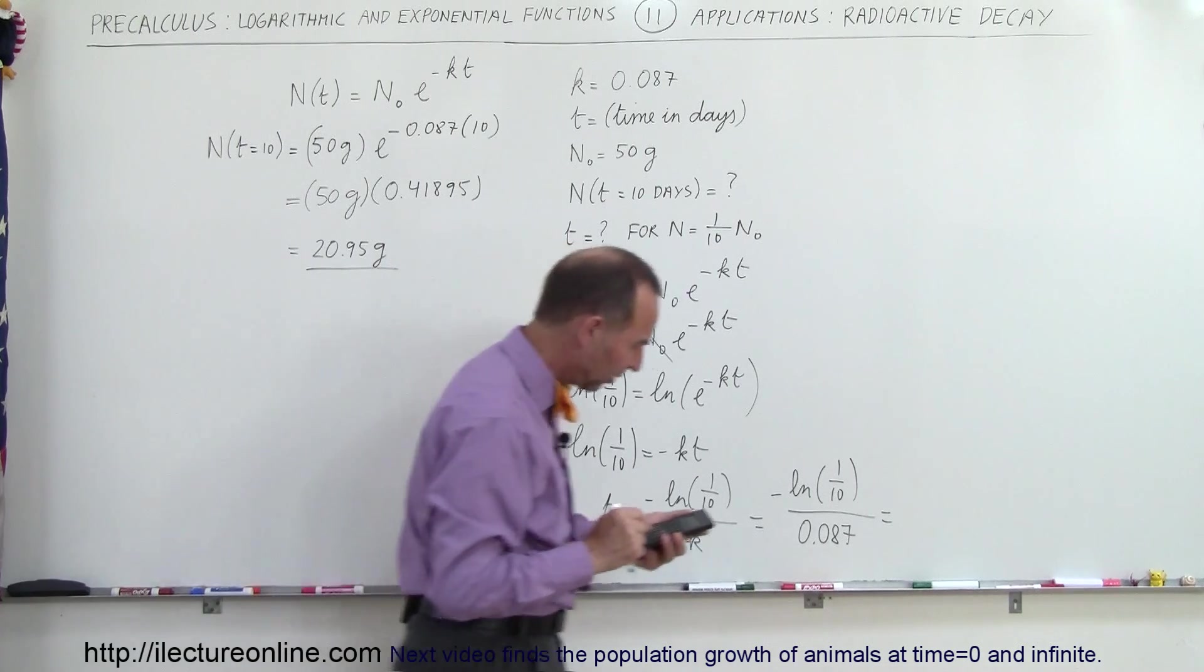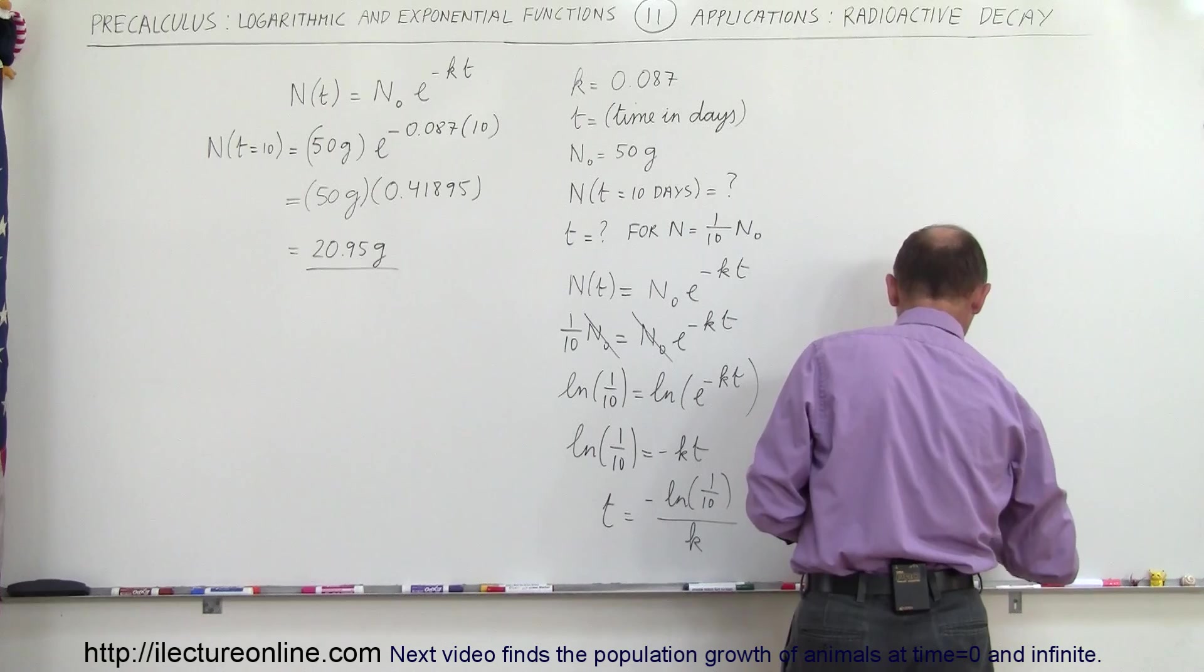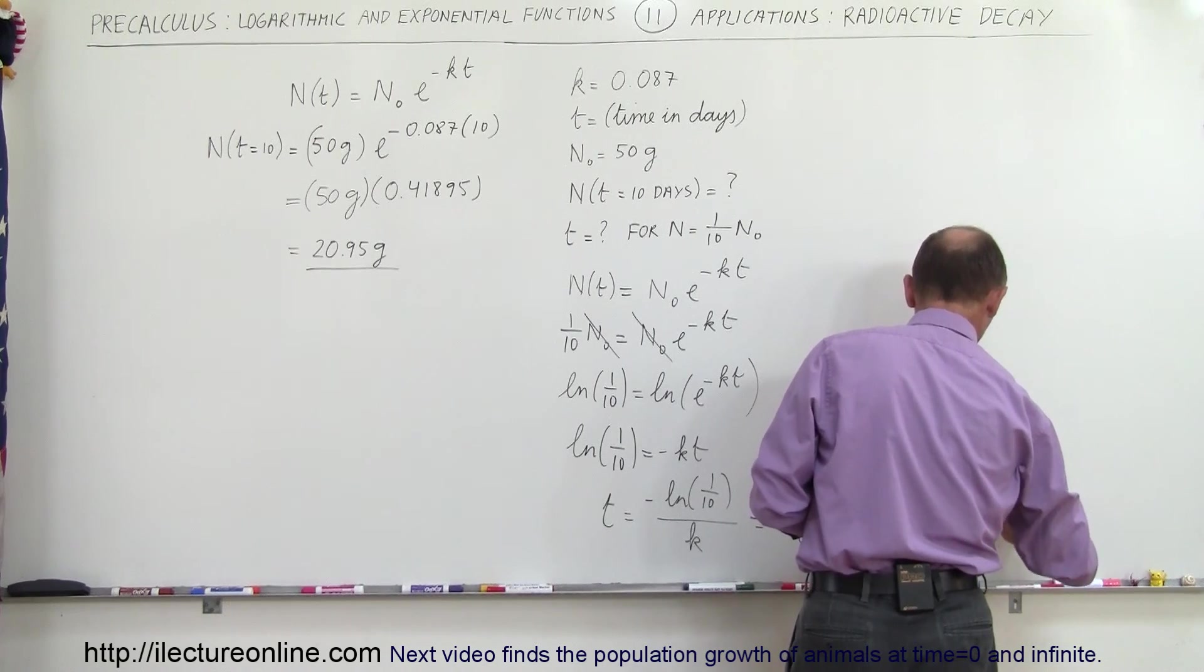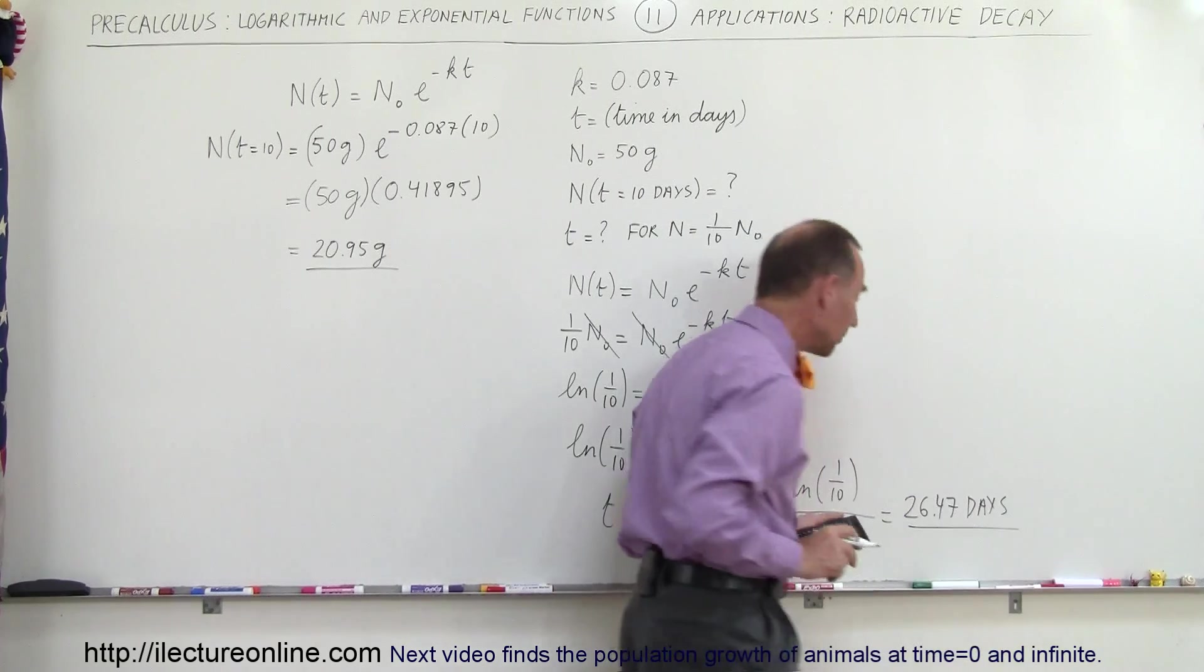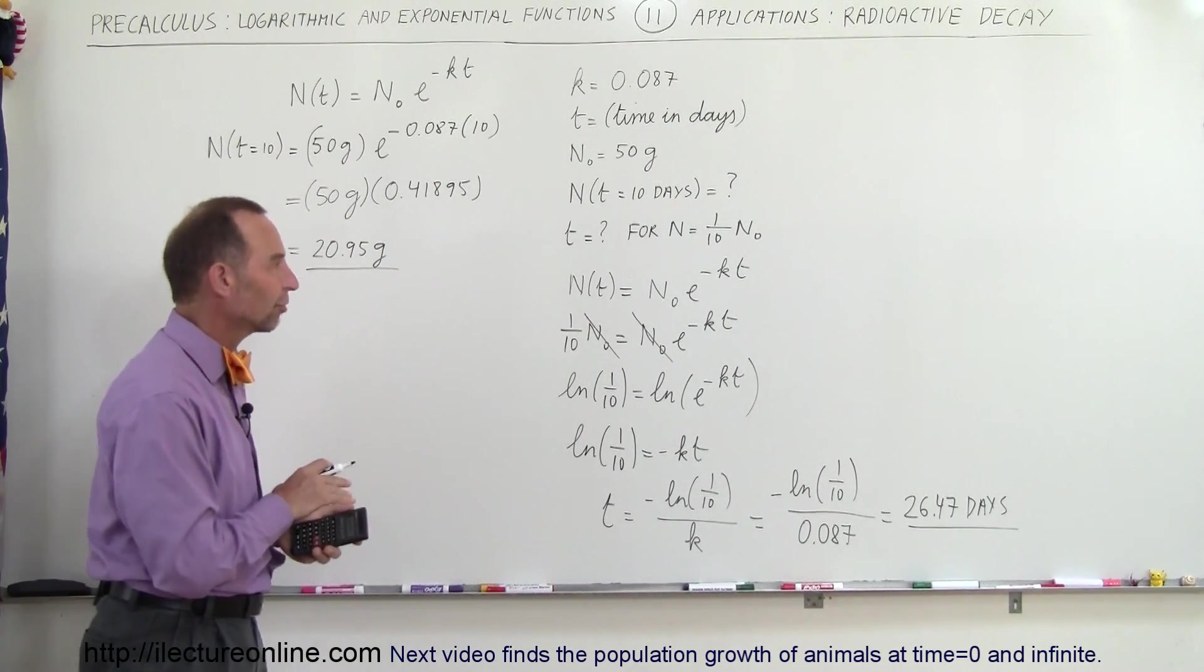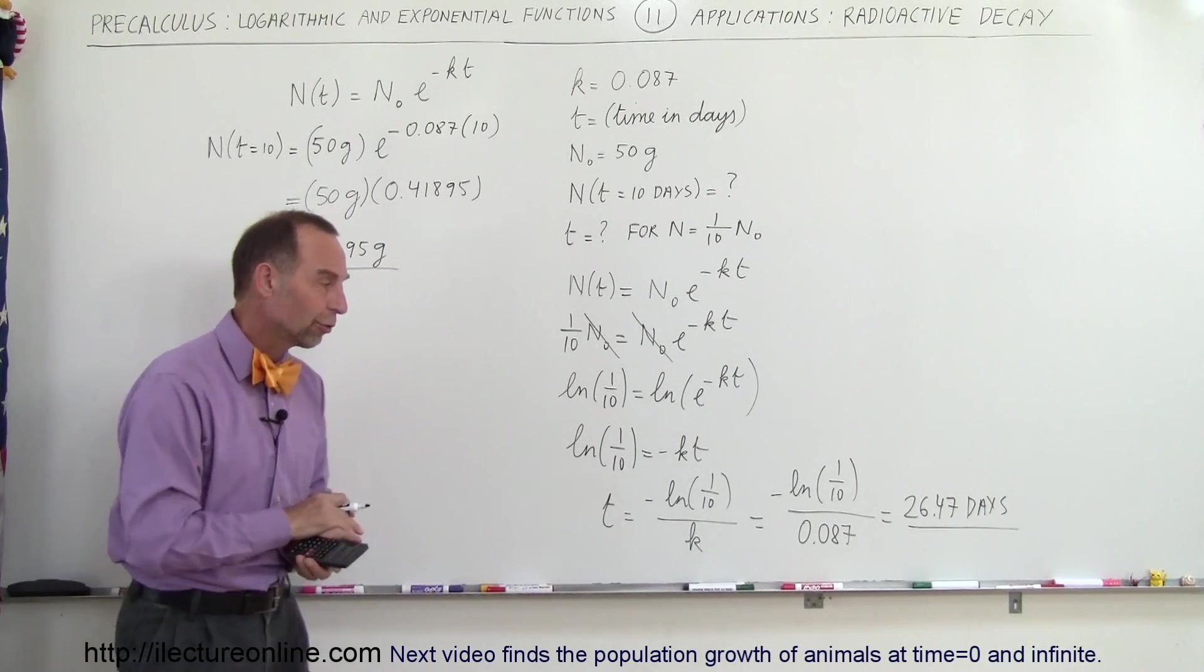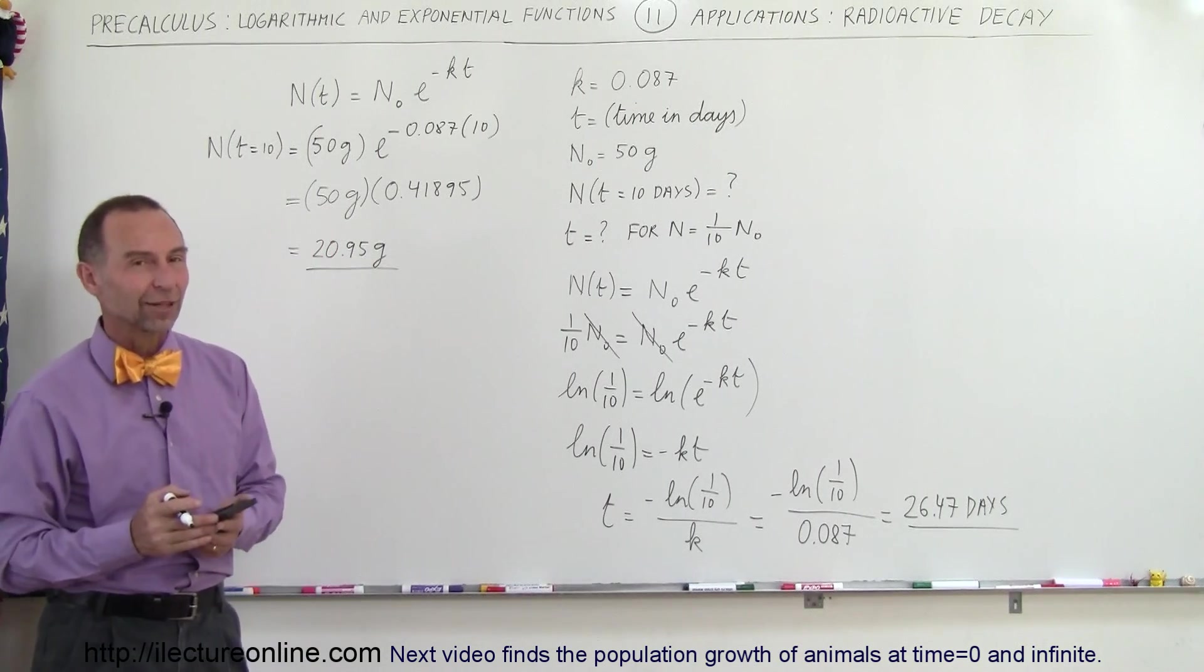When I do that I get 26.47 days. 26.47 days is what it will take for the radioactive material to decay down to where there only is one tenth of it left, so only 10% of the original amount is left after 26.47 days. And that's how that's done.